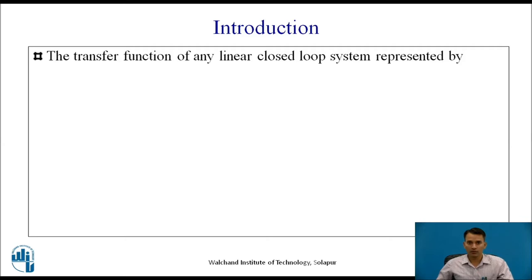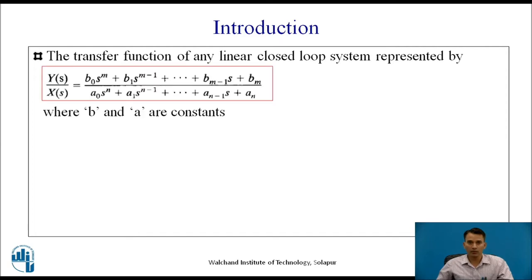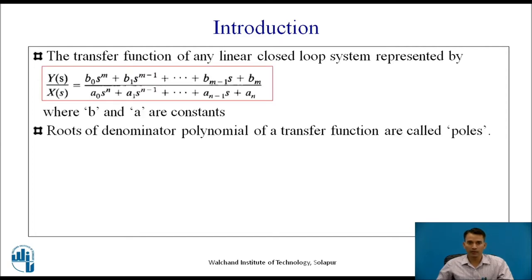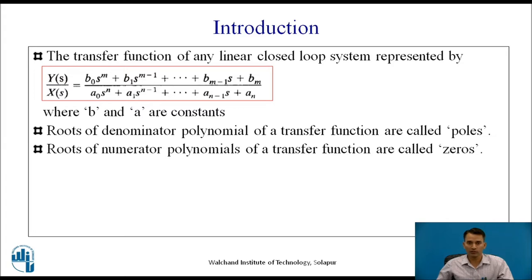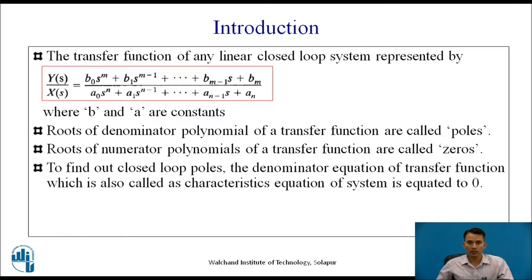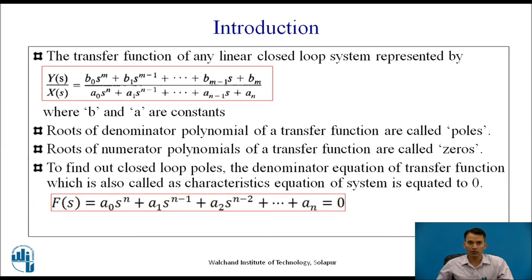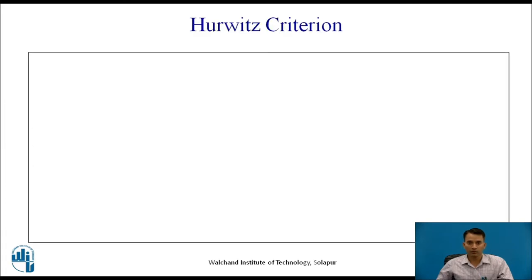The transfer function of any linear closed-loop system is represented where b and a are constants. Roots of denominator polynomials of a transfer function are called poles, and roots of numerator polynomials are called zeros. To find out closed-loop poles, the denominator equation of the transfer function, also called the characteristic equation of a system, is equated to zero: a0·s^n + a1·s^(n-1) + ... + an = 0, also denoted as f(s).